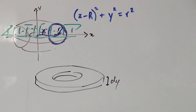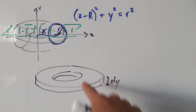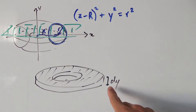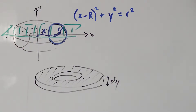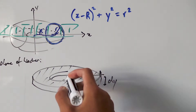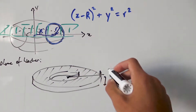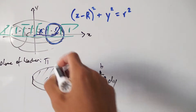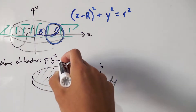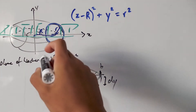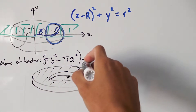Using y as our variable of integration, we have to find the volume of these washers in terms of y. To find the volume, we need to find the cross-sectional area — if we find that area, we multiply by dy to get the infinitesimal washer volume. The shaded area is the area of the big circle minus the area of the smaller circle. Calling the big radius b and the small radius a, the area is πb² minus πa², and multiplying by dy gives the volume.